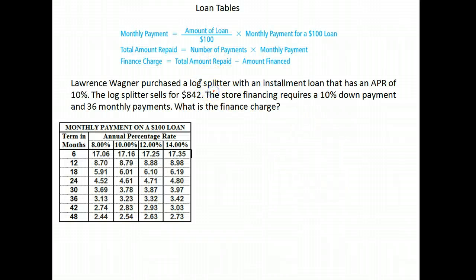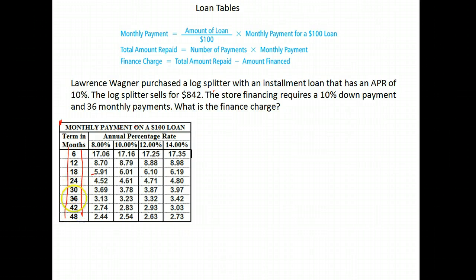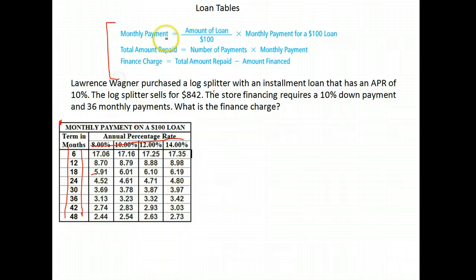Next we're going to start working with some loan tables. Notice down here I have a table that tells me your monthly payment for every hundred dollars of a loan. It has the terms here — the number of months: 6, 12, 18, 24, 30 — that's how many months you're given to pay it off. And across the top we have our percentage rates. We have all the formulas up here that you will need.